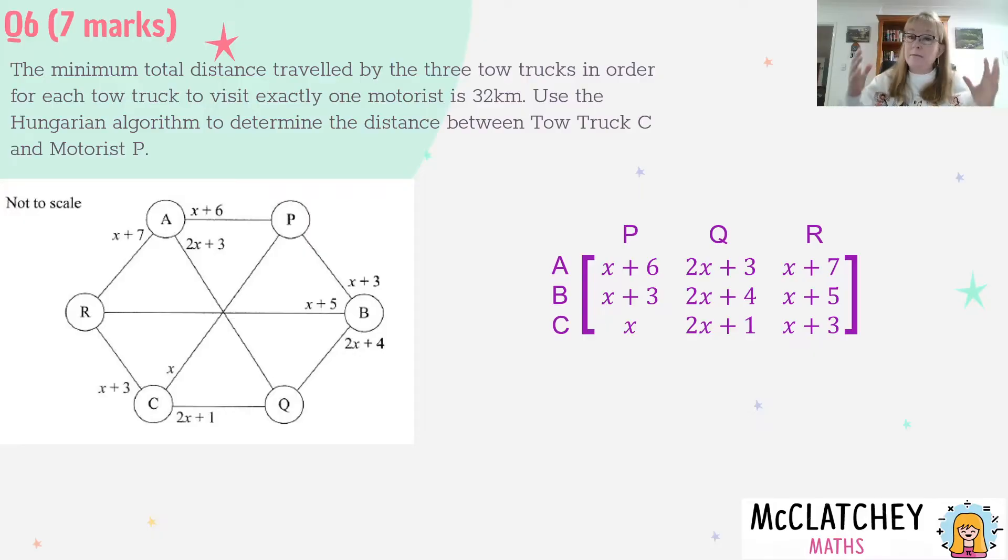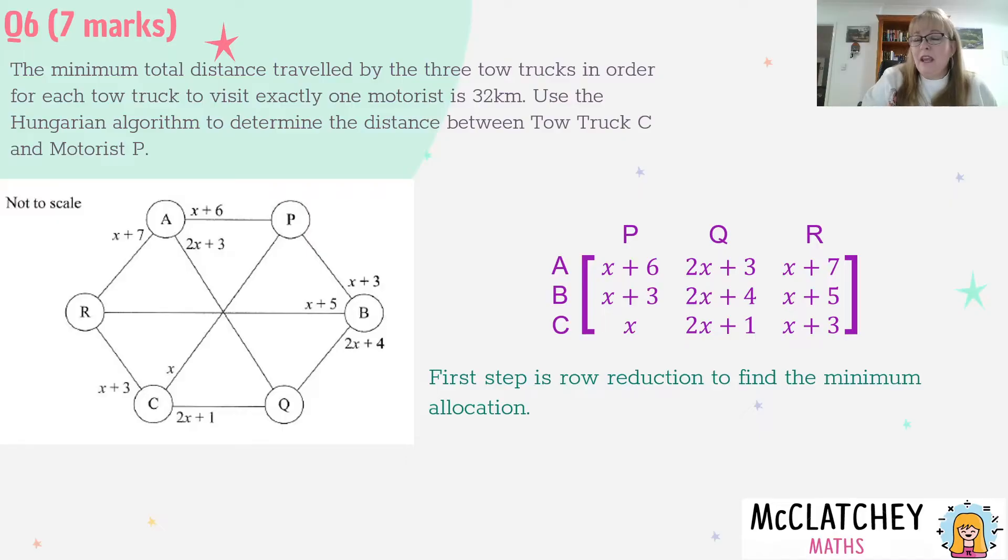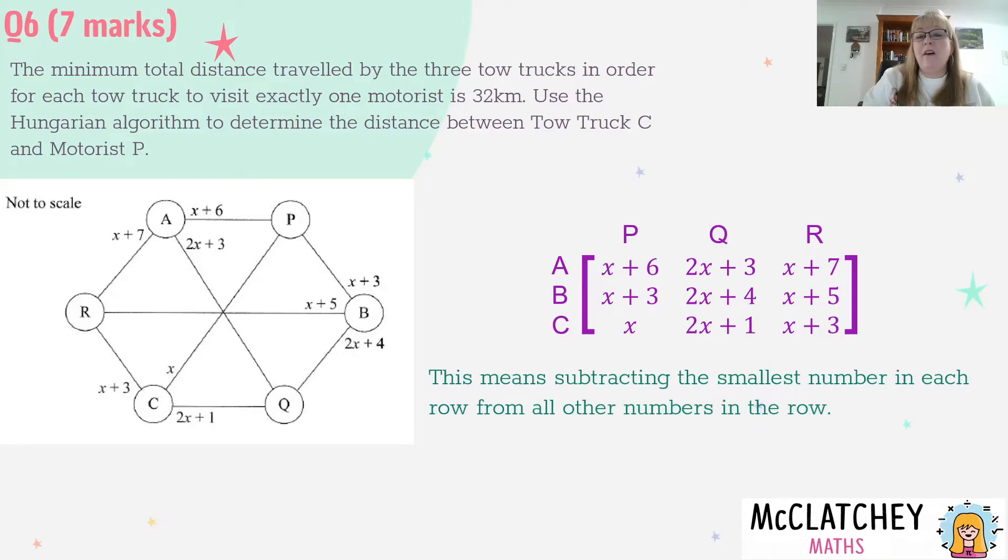You'll notice now I've got this matrix. Once again it's unfamiliar because it's full of algebraic expressions and we're not used to that. However the principles we're told to use the Hungarian algorithm and that principle is still going to stand. Now we get our first mark for putting this in a matrix form. Our next step is row reduction, where we find the smallest number in each row and we take that number away from everything else in the row.